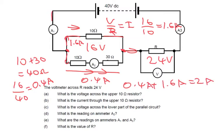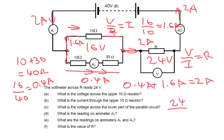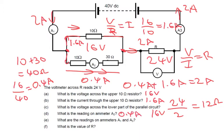Therefore coming down here we've got 2 amps, and going up here we've also got 2 amps. What is the value of R? Well, we know we've got 2 amps, so V over I equals R — 24 divided by 2 is 12 ohms. So to summarize: the voltage across the upper 10 ohm resistor is 16 volts, the current through it is 1.6 amps, the total voltage across the lower part of the parallel circuit is also 16 volts, the reading on ammeter A2 is 0.4 amps, ammeters A1 and A3 both read 2 amps, and the value of R is 12 ohms.